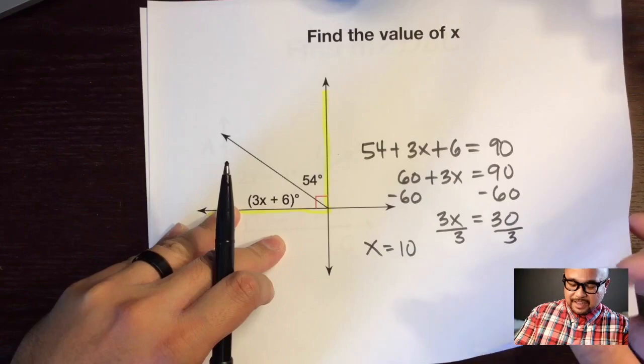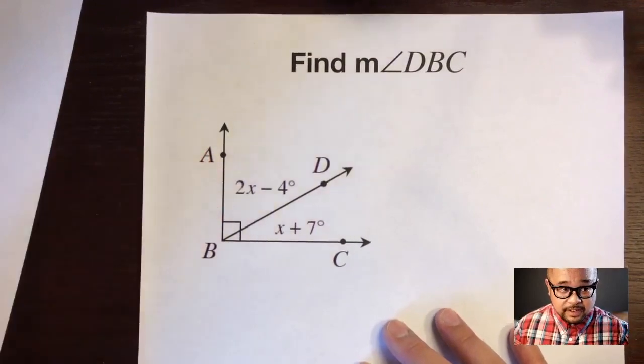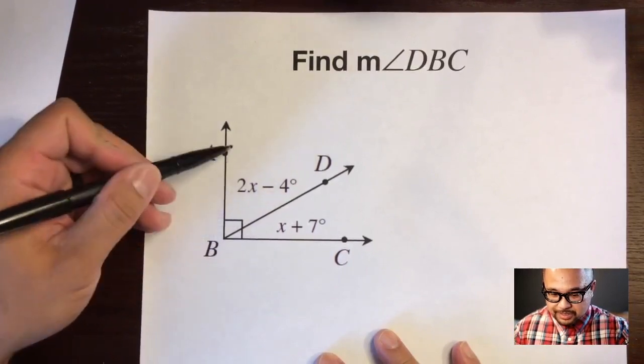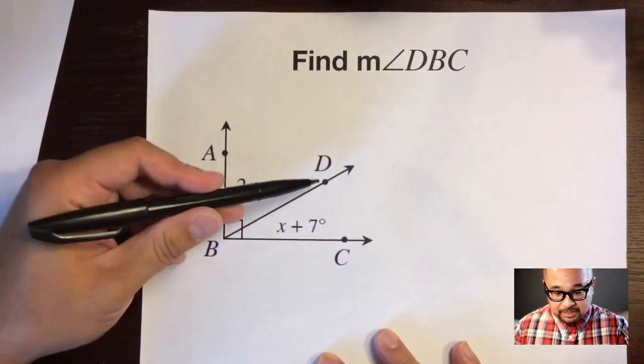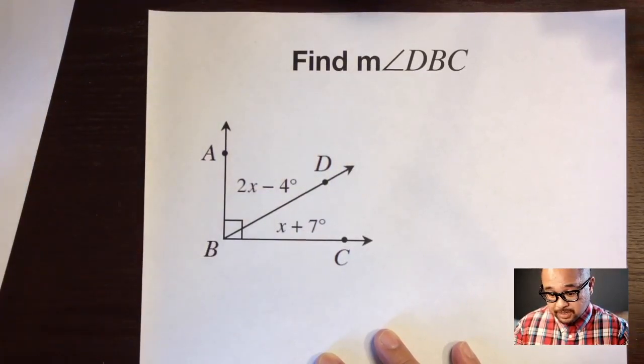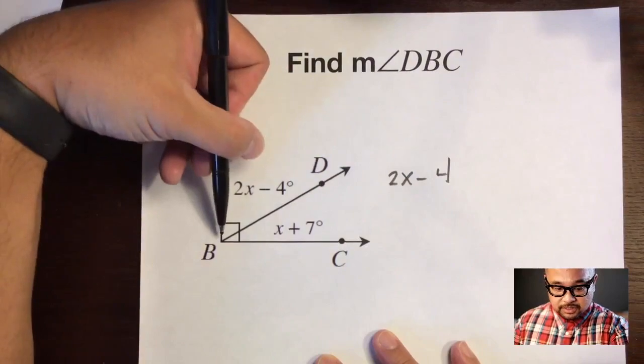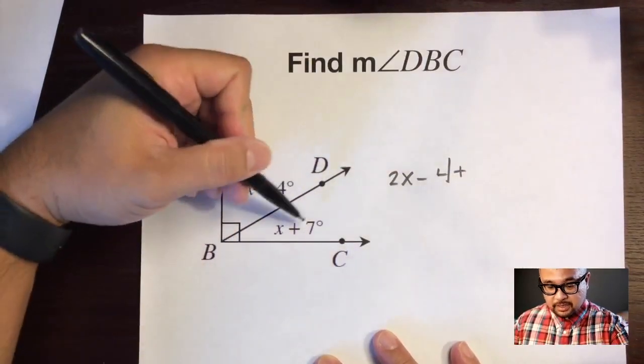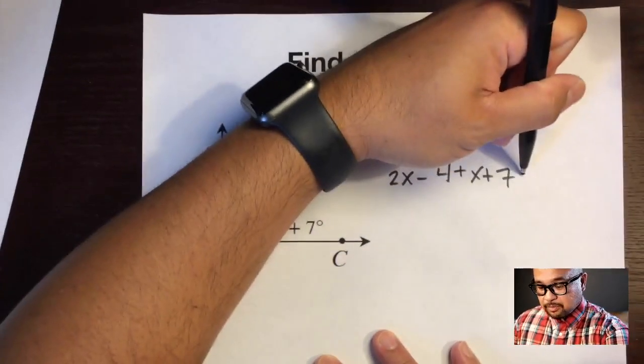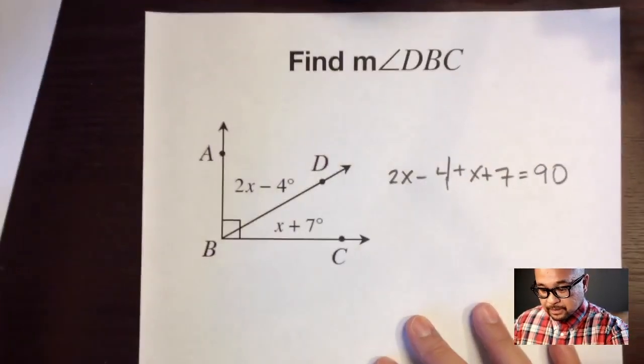The very last example for complementary angles. It says find the measure of angle DBC. What's the key here? This square right here. The square says that this angle, angle ABD, plus this angle, angle DBC, equals 90. So let's write that: 2x minus 4, which is angle ABD, plus x plus 7, which is angle DBC, they both add up or their sum is 90 degrees.